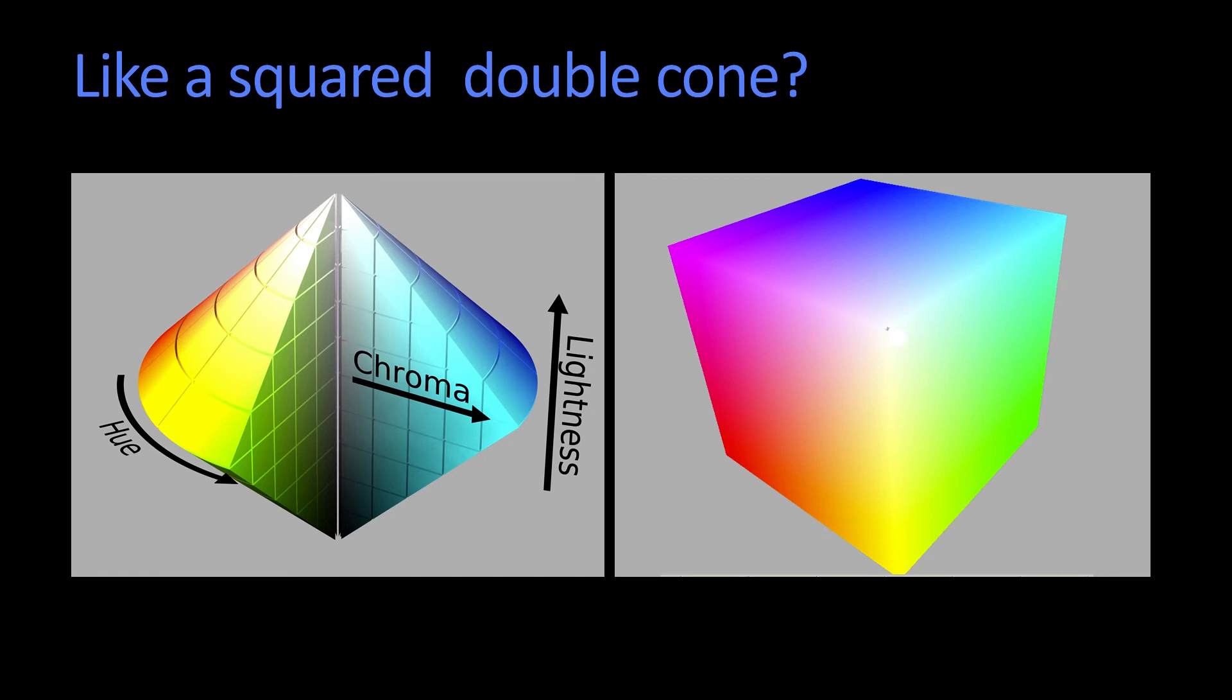But the idea is, white would be at a point on the top, black would be at a point on the bottom. And then you would have chroma as you went around, and that's why my preference is the double cone.